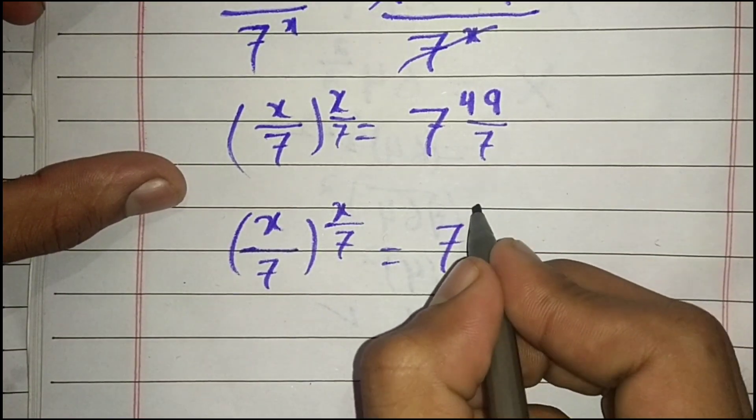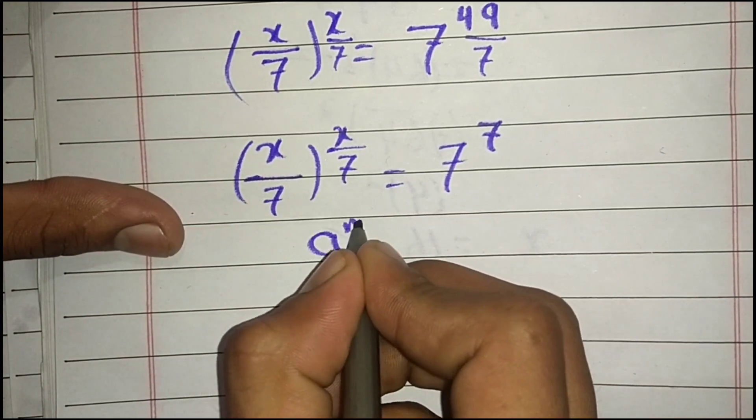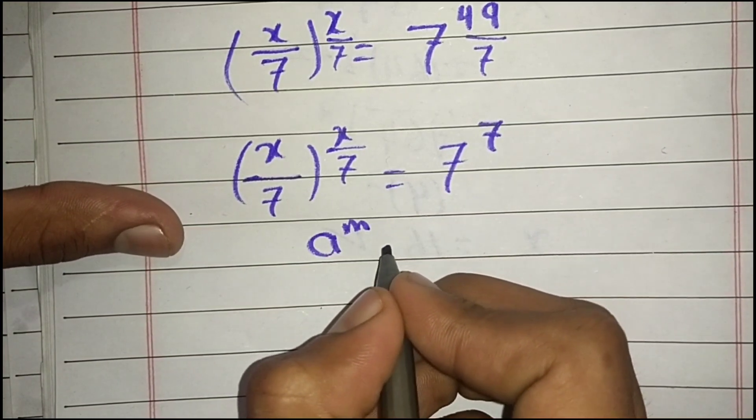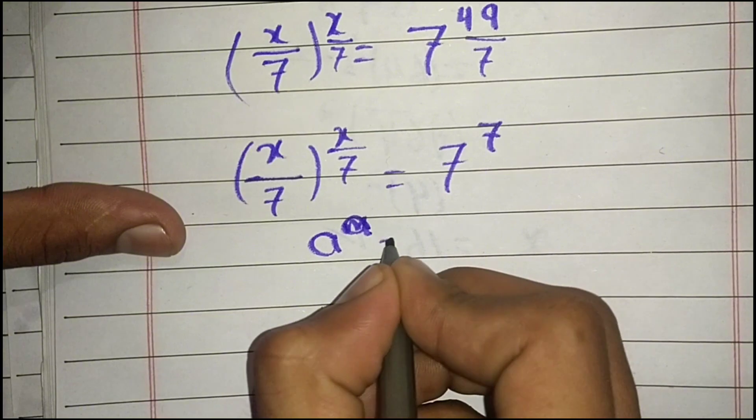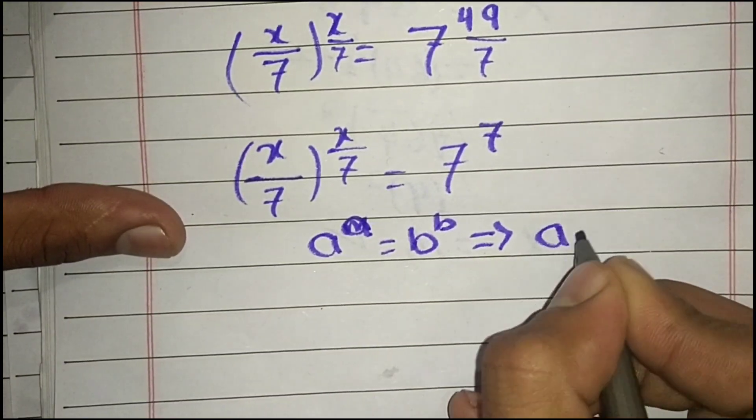49 divided by 7 equals 7. We have the property that if a^a = b^b, then a = b.